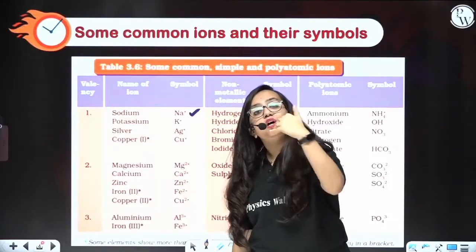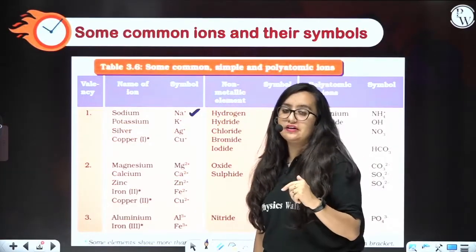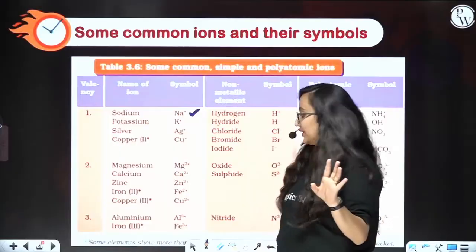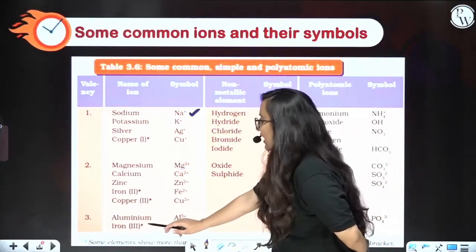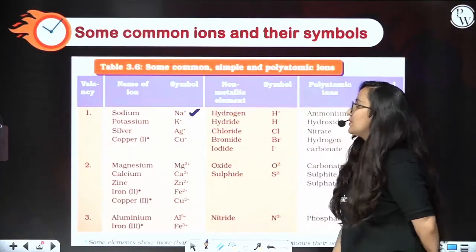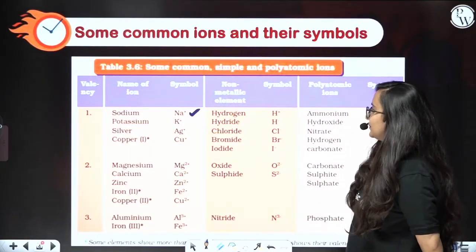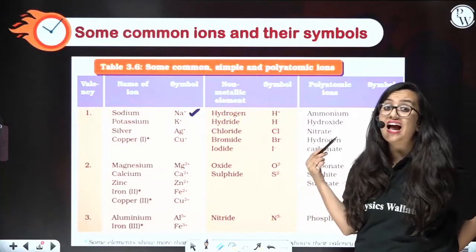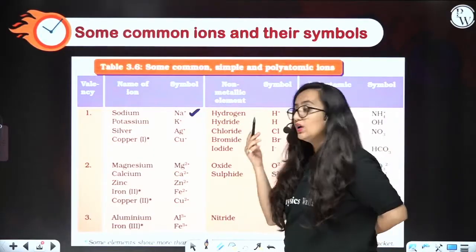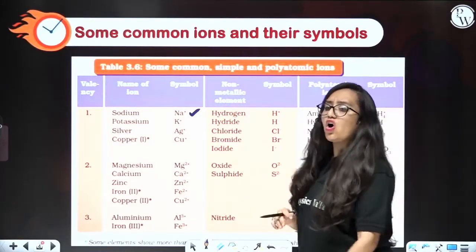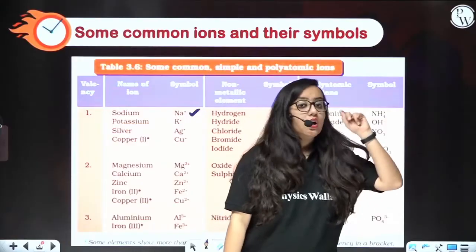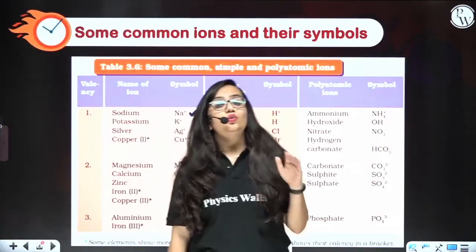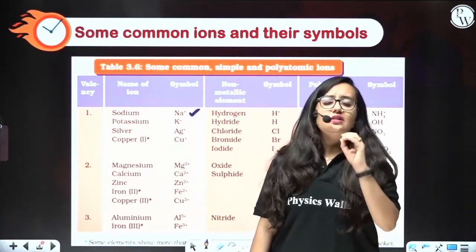A cation means the atom has donated electrons, and an anion means the atom has gained electrons. Valency 3 belongs to aluminium and iron — plus 3, of course. For non-metallic elements: hydrogen is H⁺. Chloride is Cl⁻, bromide is Br⁻ — all halogens need one electron to complete their octet, so their valency is always minus 1. Oxide is 2⁻, sulphide is 2⁻, and nitride is 3⁻.